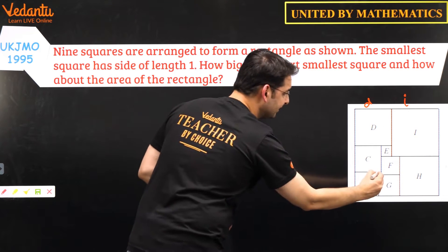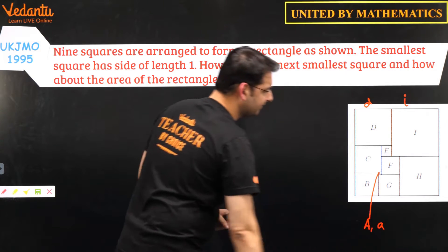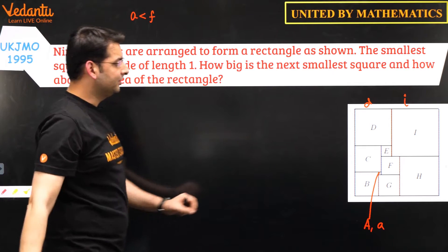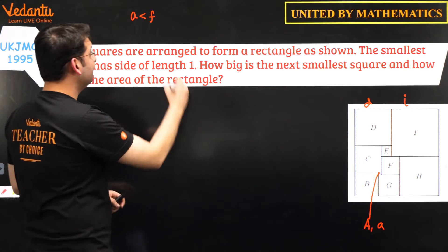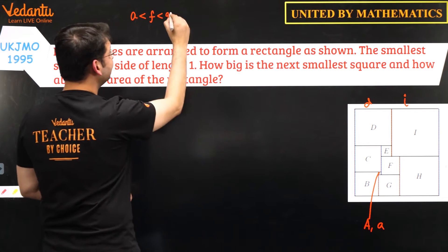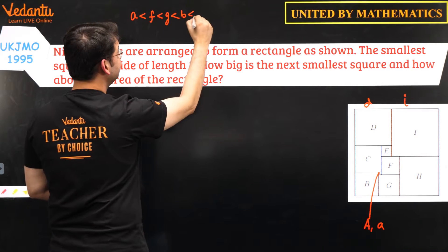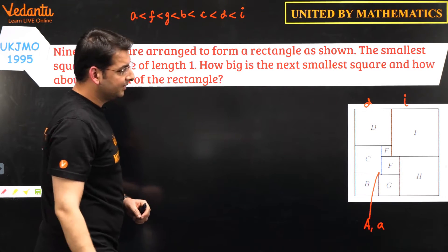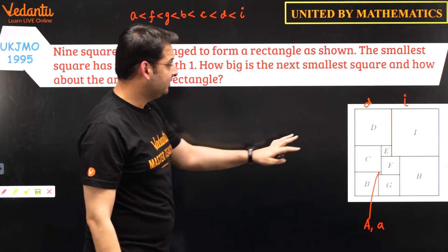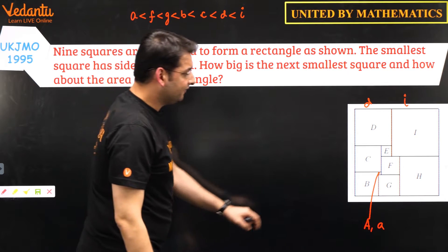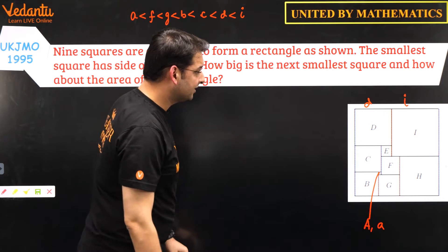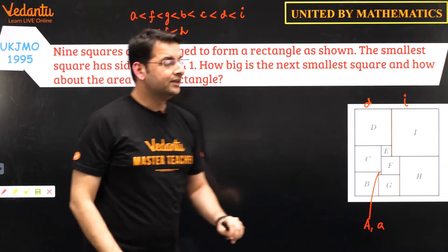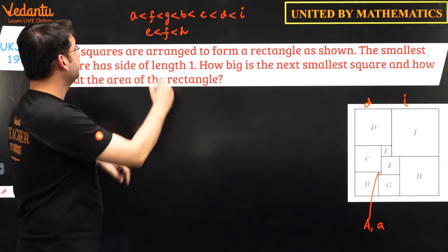Let the smallest square be called a, whose side is small a. From the figure, it is very clear that a < f < g < b < c < d < i. We've covered 7 squares, but there are 9 total. The remaining squares are e and h, and clearly e < f < h. So the second smallest square is e.